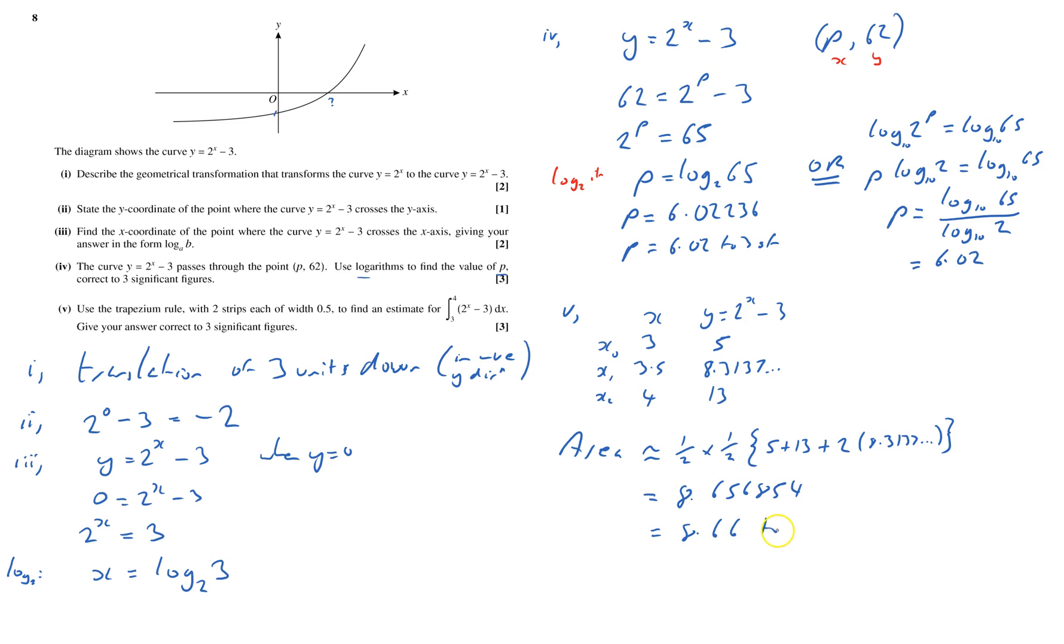And that's 2-line calculator. That equals 8.656854, which equals 8.66 to 3 significant figures. And that's question 8 done.